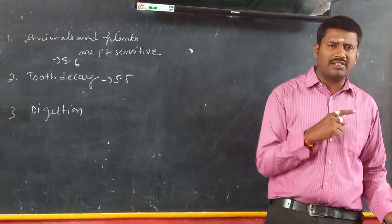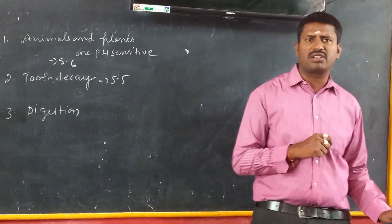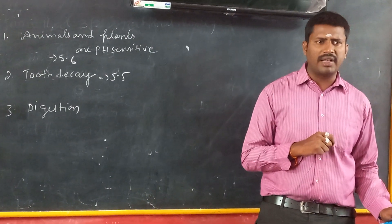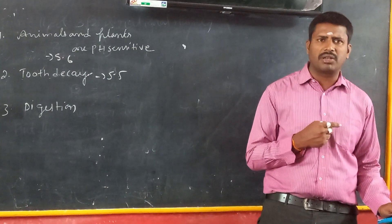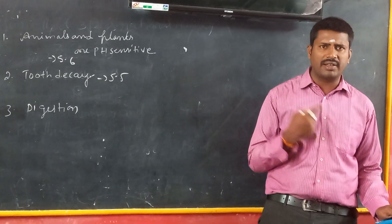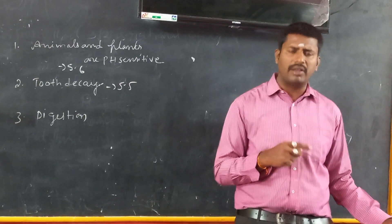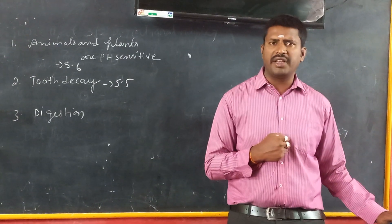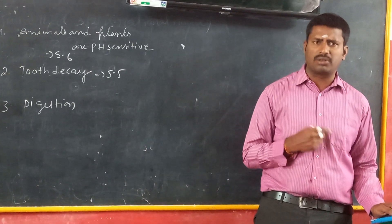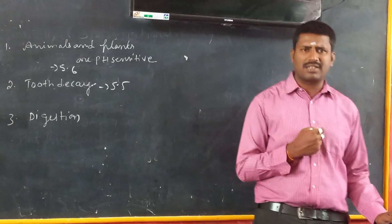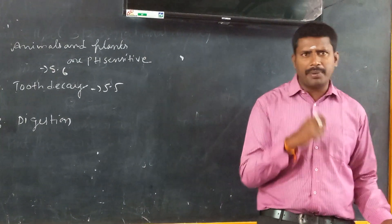There are chances to lose the teeth also if the pH value is less than 5.5 — this situation is called tooth decay. In order to prevent that, we need to frequently wash our mouth before and after eating. We also need to brush our teeth using toothpaste, preferably two times a day. When we brush two times a day, we can overcome tooth decay.